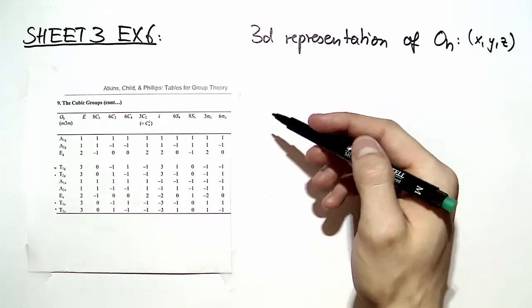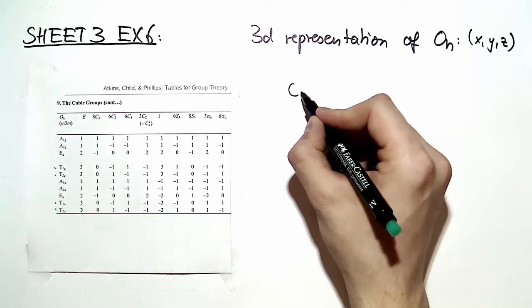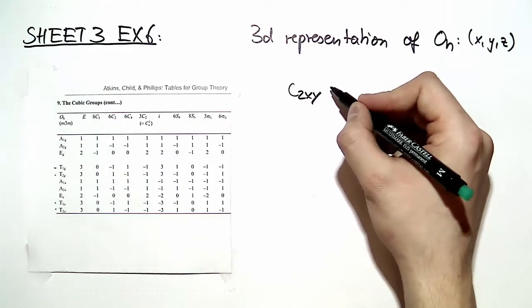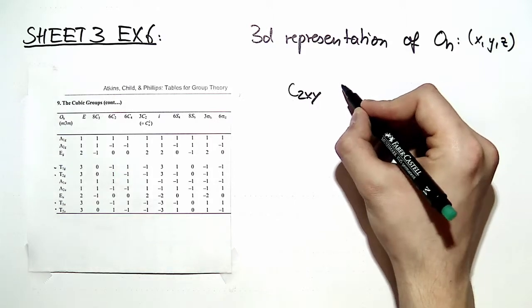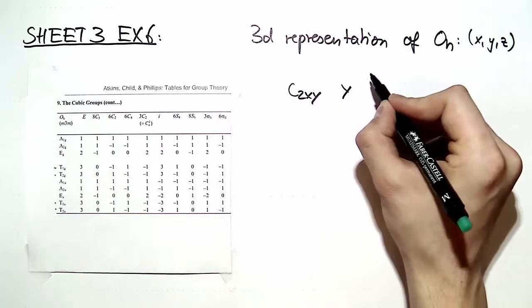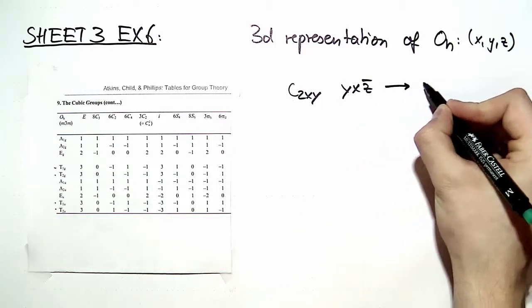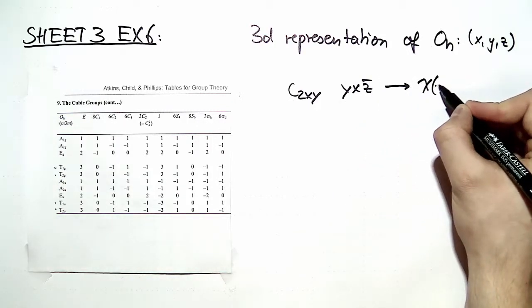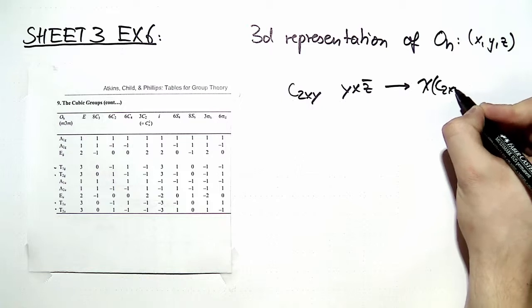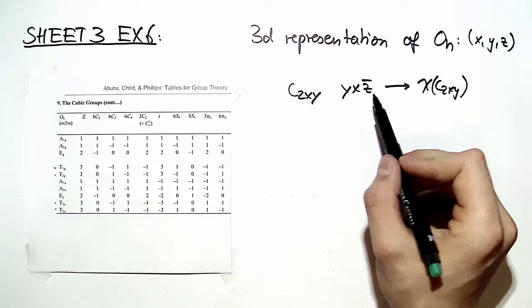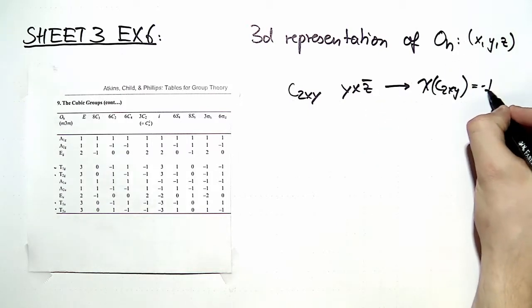So we can pick just arbitrary one twofold rotation. Let's pick c2xy, and c2xy is given by the transformation of x, y, and z to y, x, and minus z. And therefore, the character of c2xy can be read out immediately. You have only one diagonal element, namely z bar, and this yields minus one.